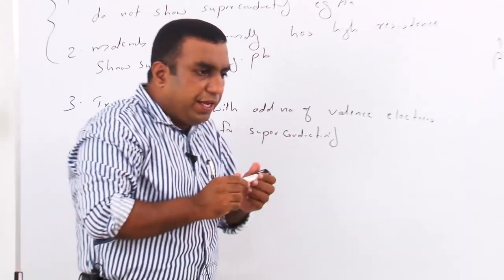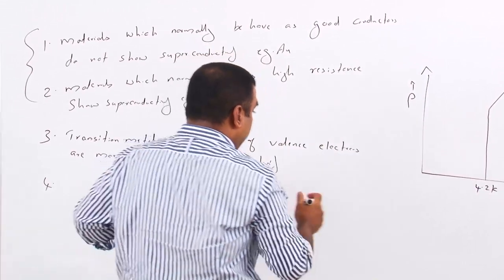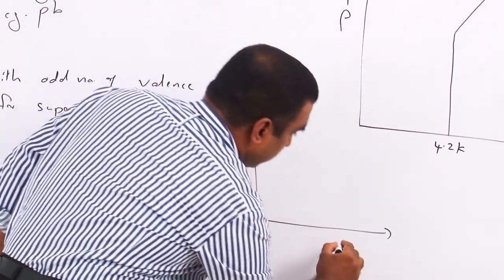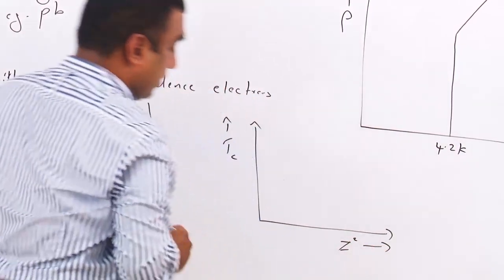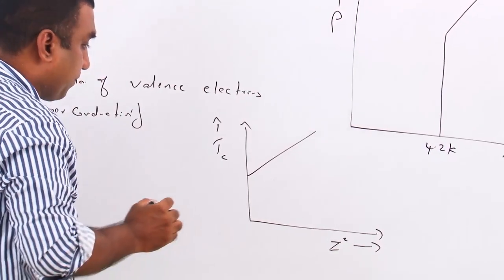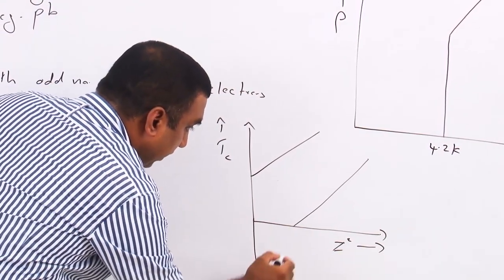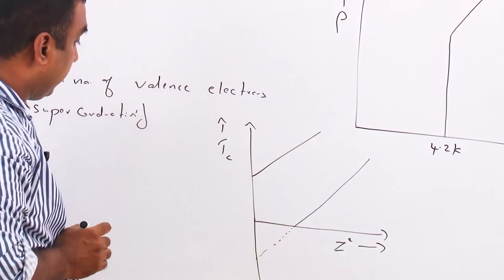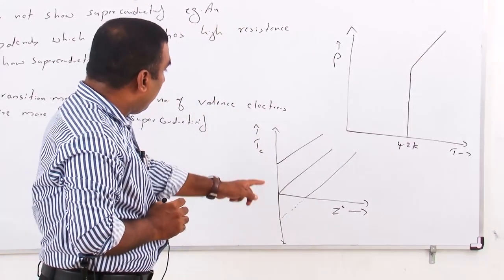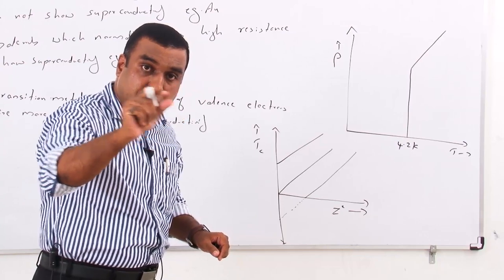Fourth, if we take metals in a particular row of the periodic table and plot a graph with the transition temperature along the y-axis and the square of the atomic number along the x-axis, the graph will be a straight line. The line may have a positive y-intercept, a negative y-intercept, or may pass through the origin. This gives the variation of critical temperature with the square of atomic number for metals in a particular row of the periodic table.